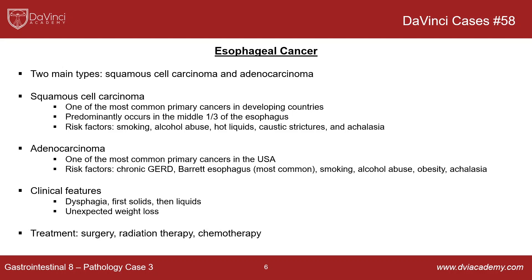Esophageal cancer in a nutshell has two main types: squamous cell carcinoma and adenocarcinoma. Squamous cell carcinoma worldwide is by far the most common and is one of the most common primary cancers in developing countries. It predominantly occurs in the middle third of the esophagus. Risk factors involve chronic insults to the epithelium: smoking, alcohol abuse, hot liquids, strictures, and achalasia. Adenocarcinoma you want to associate with GERD — squamous cell is not really associated with GERD. Since GERD is so common in the United States, adenocarcinoma is actually one of the most common primary cancers in the US. Risk factors in addition to GERD include Barrett's esophagus (most common), smoking, alcohol abuse, obesity, and achalasia.